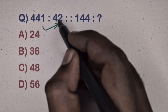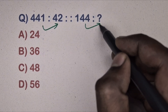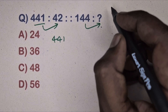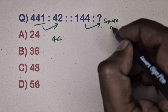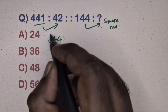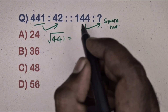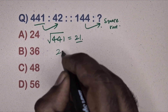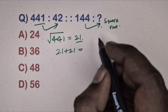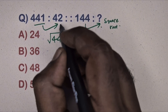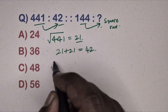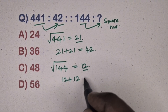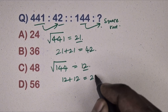Next question: 441 is related to 42, 144 is related to which number? This is the square root method. Take 441: √441 = 21. Double 21 and you get 42. Same way, take 144: √144 = 12. Double 12 to get 24. Option A is the correct answer.